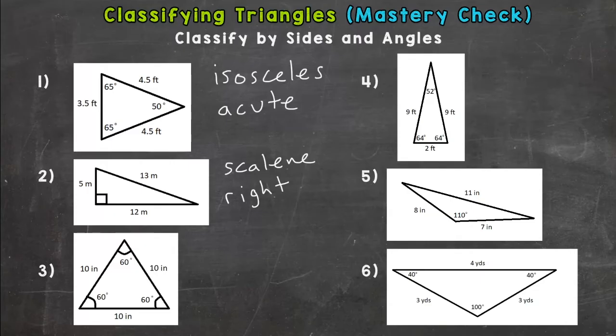Number three. All three sides are the same. So that is what we call an equilateral triangle. And then all angles are less than 90, so acute.